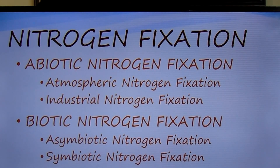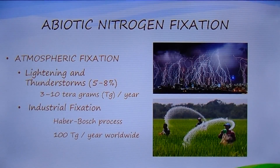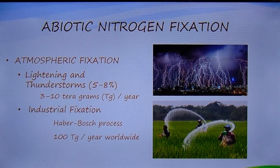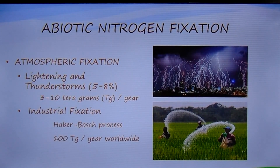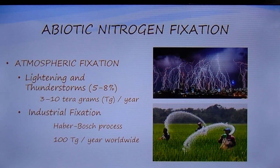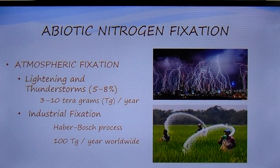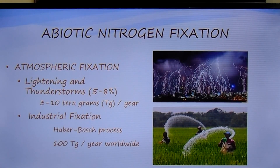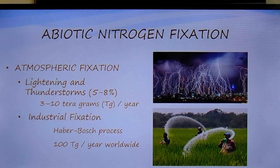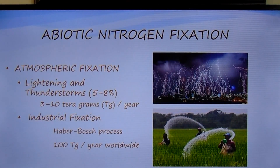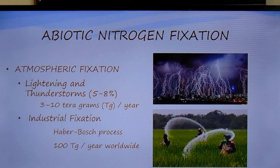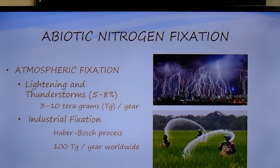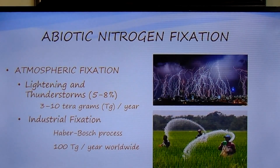Lightning accounts for some naturally occurring reactive nitrogen worldwide. Each year, lightning fixes an estimated 3 to 10 teragrams of nitrogen. The energy that lightning generates converts oxygen and nitrogen to nitric oxide, which oxidizes to nitrogen dioxide and then to nitric acid. Within days, the nitric acid is carried to the ground in rain, snow, hail, and other atmospheric depositions. This source of reactive nitrogen is important in areas where nitrogen-fixing plants are scarce.